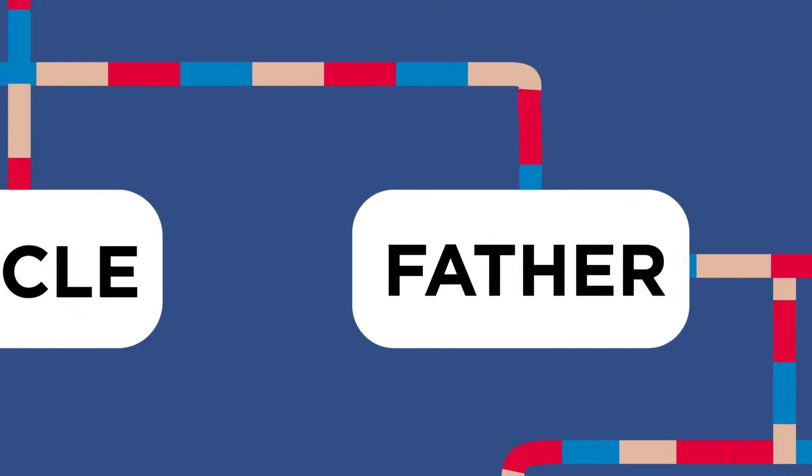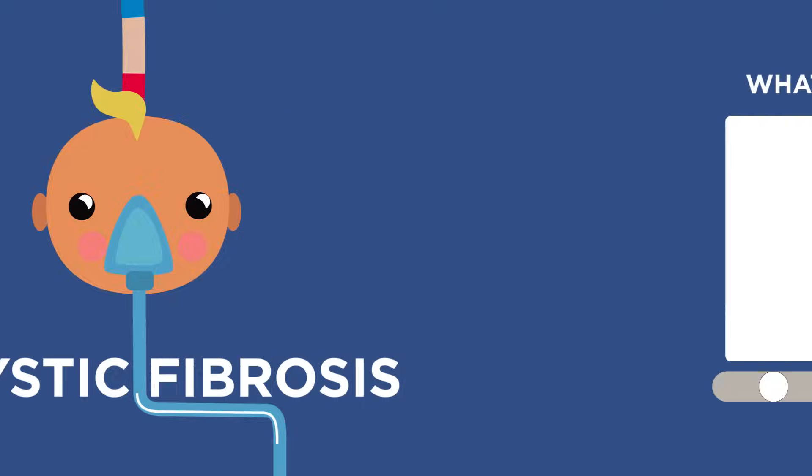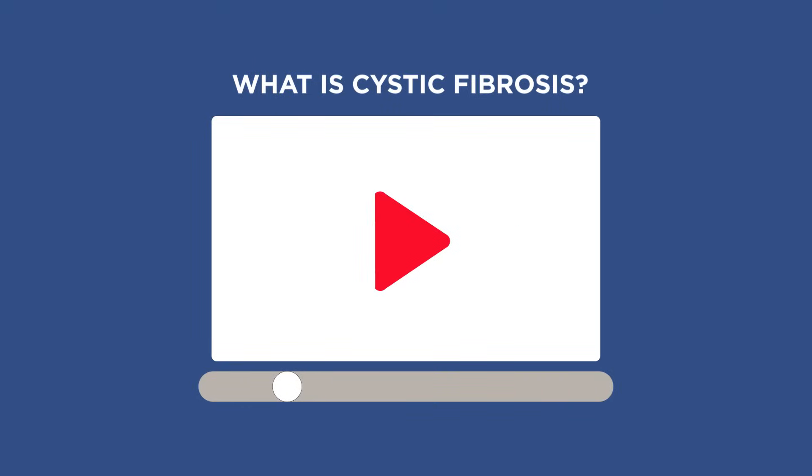Another example of an inherited disorder is cystic fibrosis. If you want to discover more about cystic fibrosis and how it affects the body then watch this video.